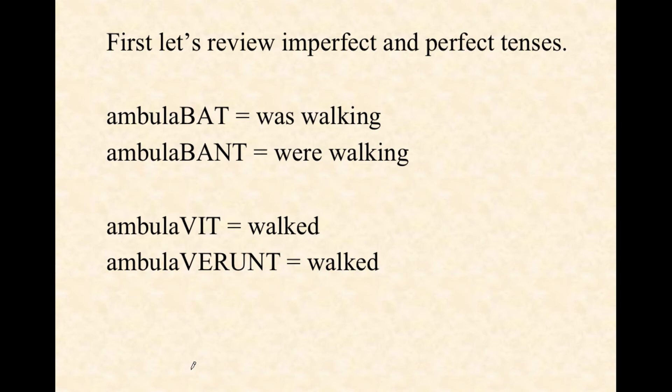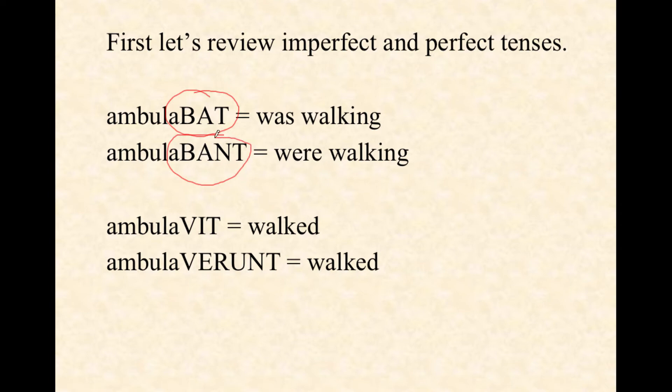First, let's review imperfect and perfect tenses. Ambulat would mean he, she, or it walks or is walking. Now take a look at what we've got: ambulabat. When you have the -bat ending, it's the singular he, she, or it was walking. The plural, ambulabant, would be they or some plural subject were walking.